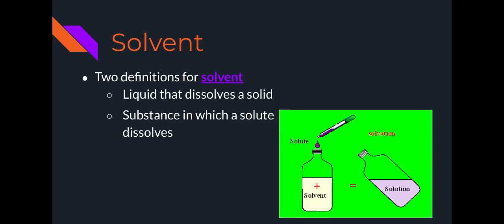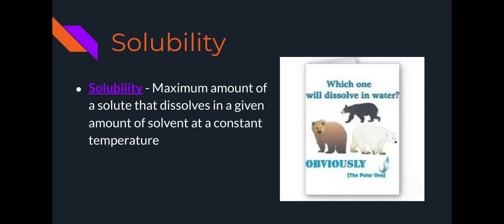Now the liquid that a solute is going to dissolve in is called the solvent. Two definitions for solvent I'm going to put include a liquid that dissolves a solid and a substance in which a solute dissolves. Now solvents and solutes mix together to make solutions, and solutions are going to have different solubilities. Solubility is the maximum amount of a solute that dissolves in a given amount of solvent at a constant temperature.